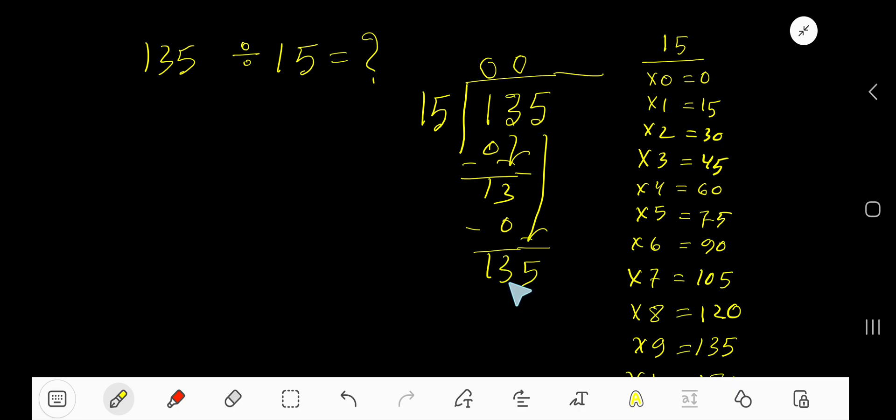15 goes into 135, how many times? You need to get a number and then you need to multiply your guessing number with this 15 and the product should be less than 135 or equal to 135. So 15 goes into 135, 9 times.